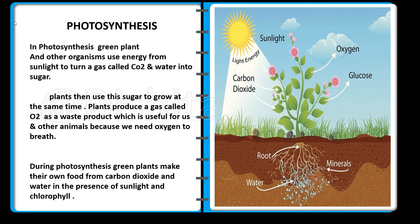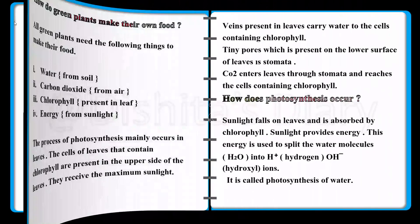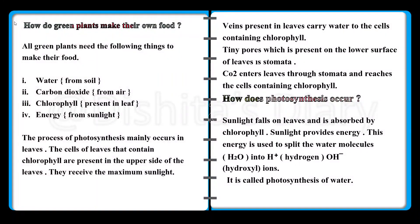How do green plants make their own food? All green plants need the following things to make their own food: water, which comes from soil as underground water; carbon dioxide from air; and chlorophyll, which is present in the leaves of the plants.